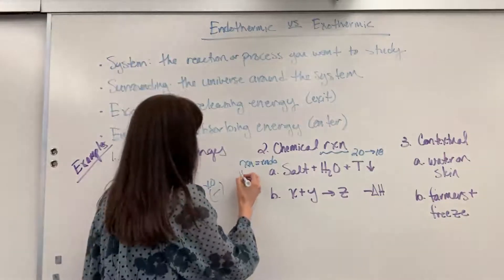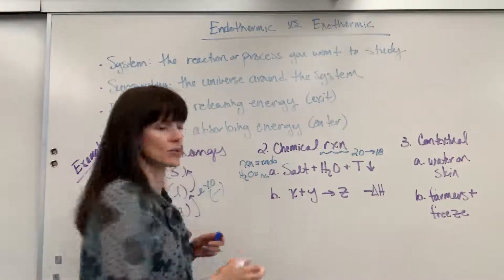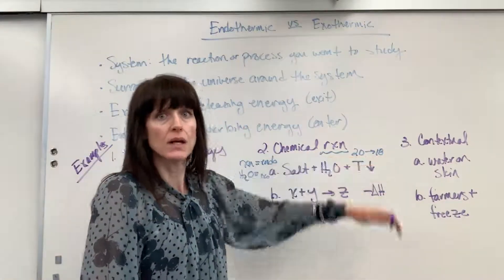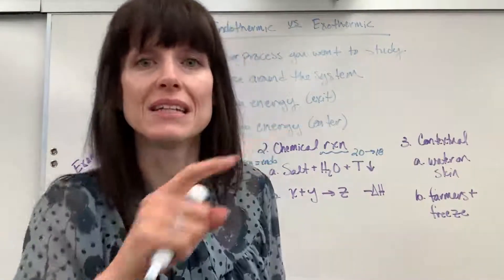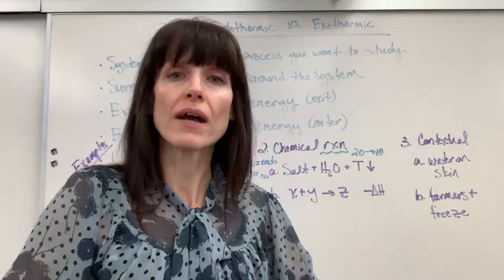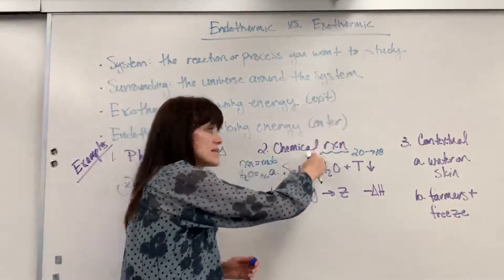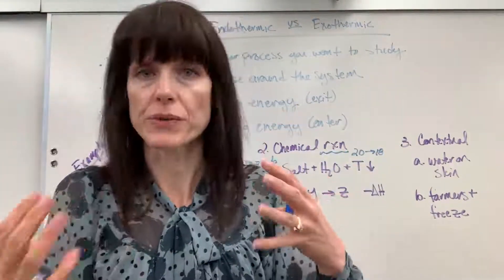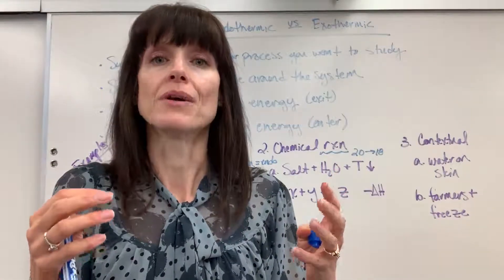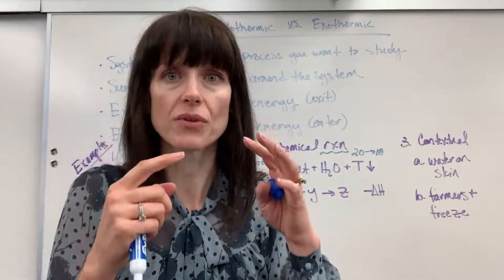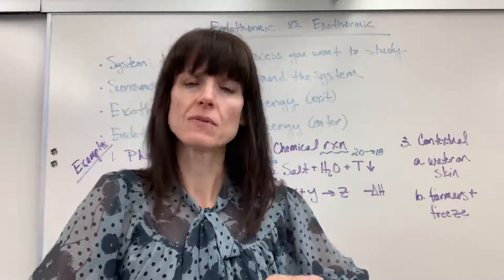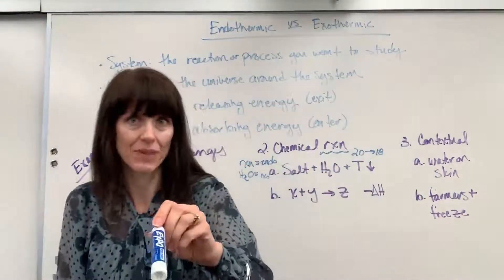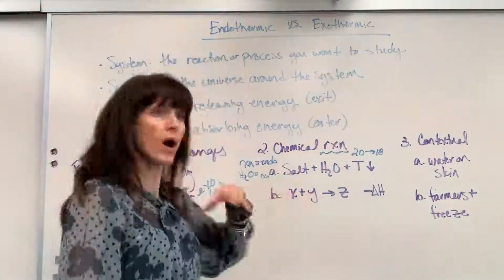So the reaction is endothermic — in order for that reaction to happen, for the reactants to break and bonds to form, it required energy. Where did it get the energy? It robbed it and took it out of the water. The water gave away its energy — that was the exothermic part. The evidence: the temperature of the solution dropped. The water started at 20 degrees, went down to 18. It gave away energy and that energy went into the system, the reaction, to force those bonds to break and for the reaction to happen.